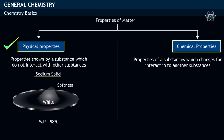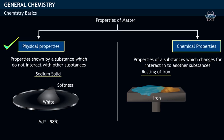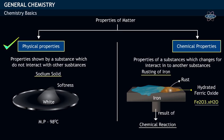While properties with changes into other substances are called chemical properties. For example, rusting of iron is a result of chemical reaction. The chemical composition of rust is hydrated ferric oxide which has a general formula Fe2O3 X number of water molecules.